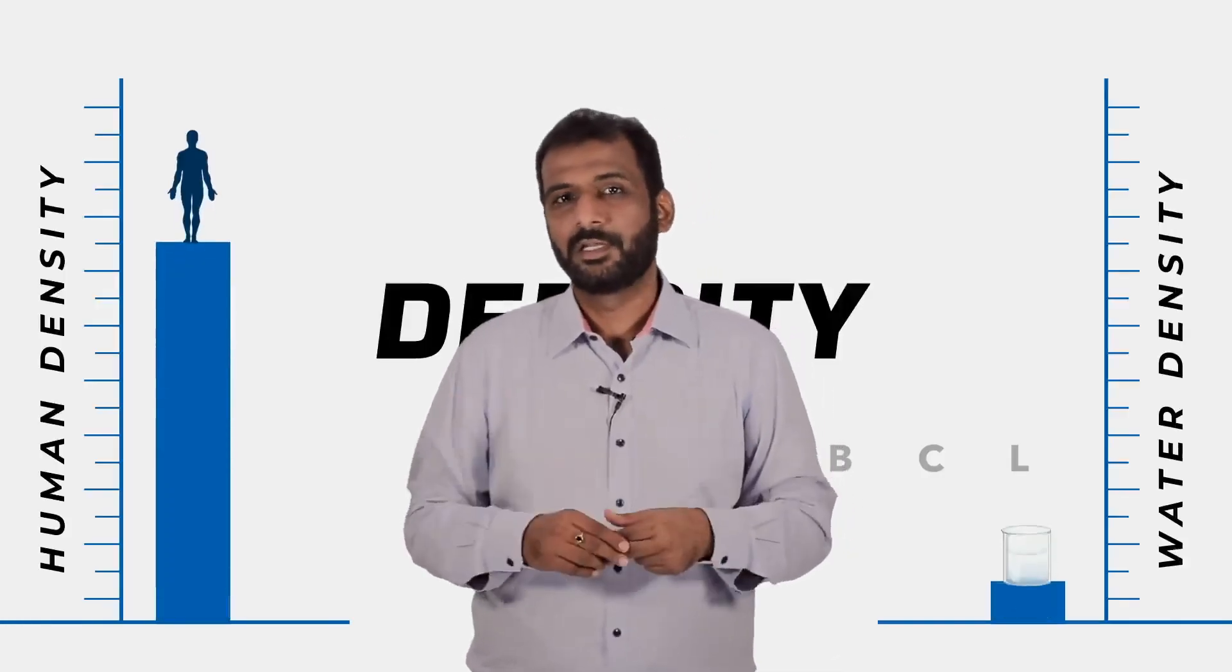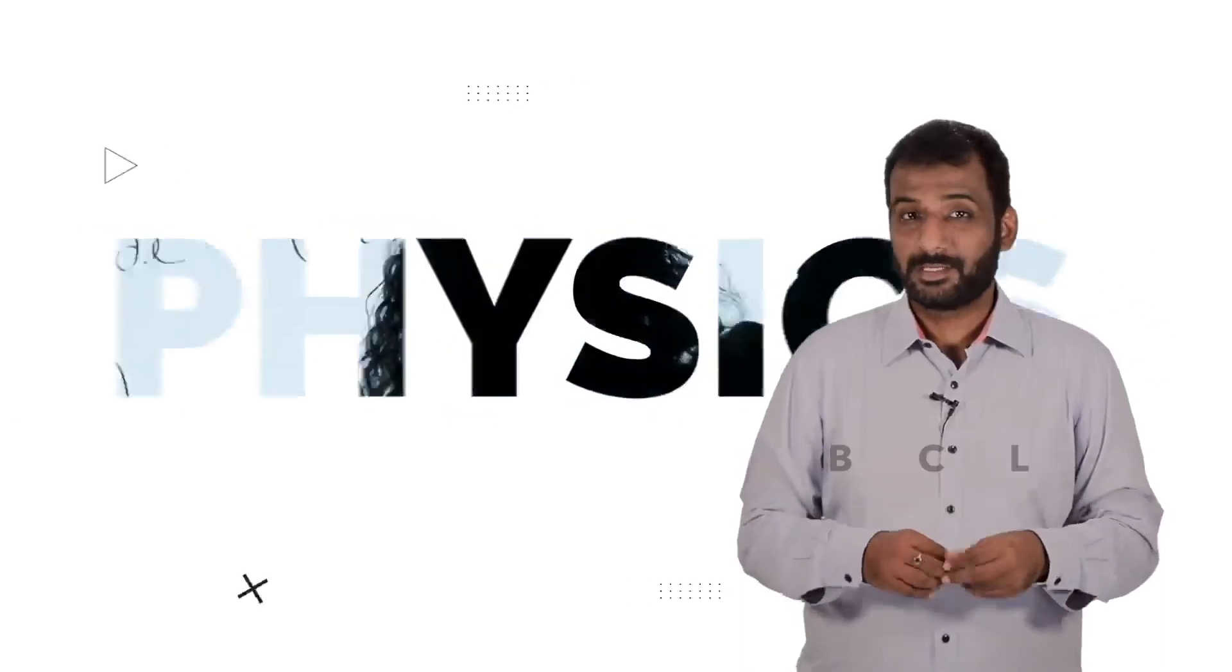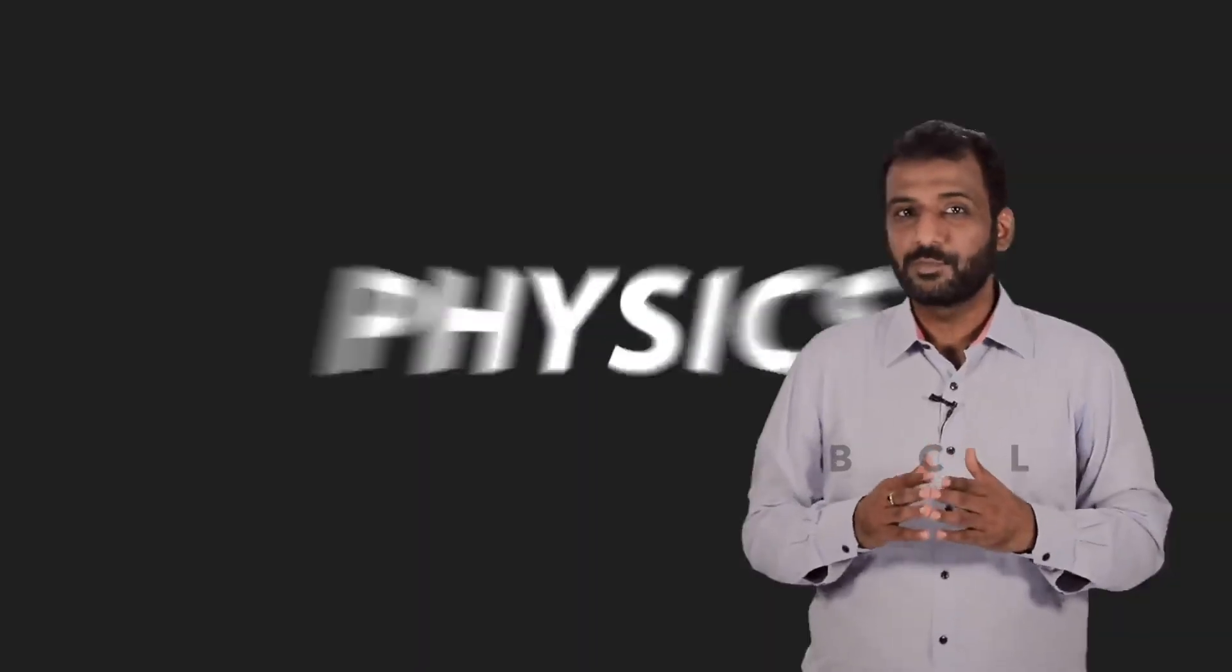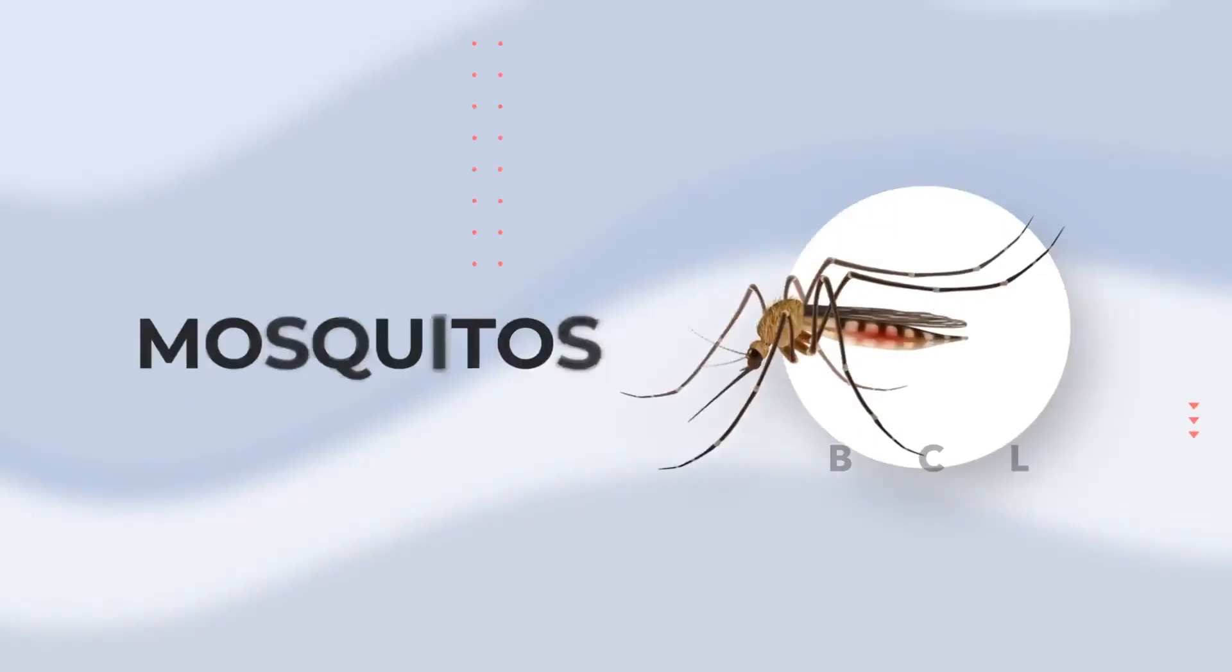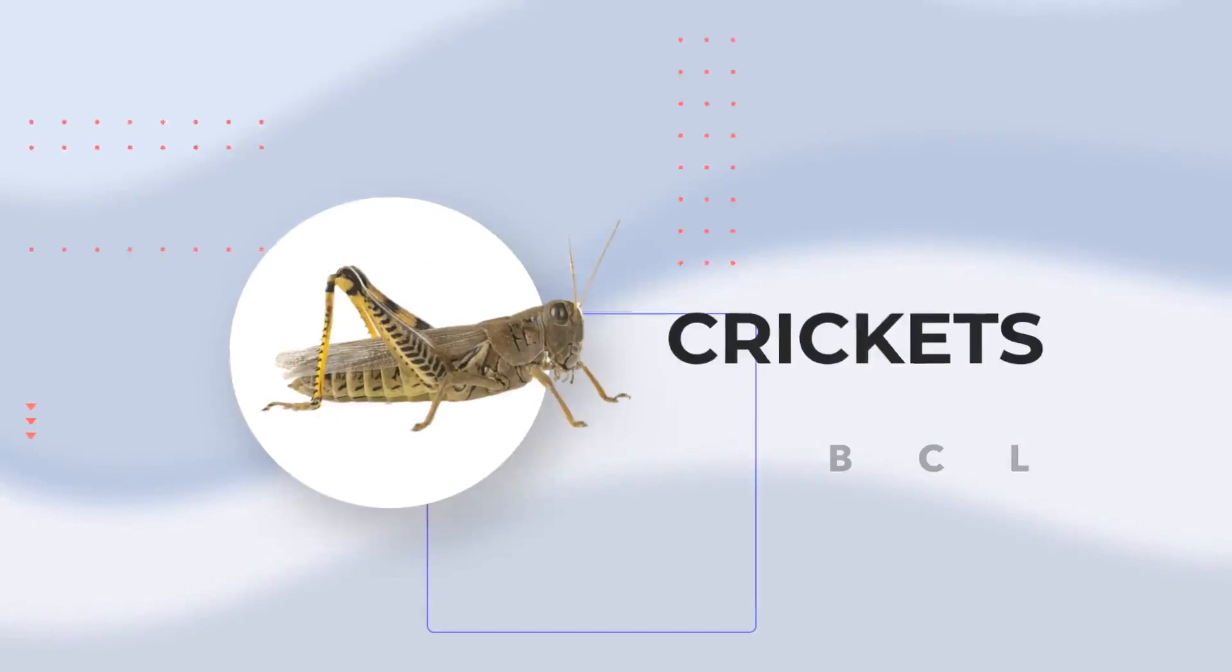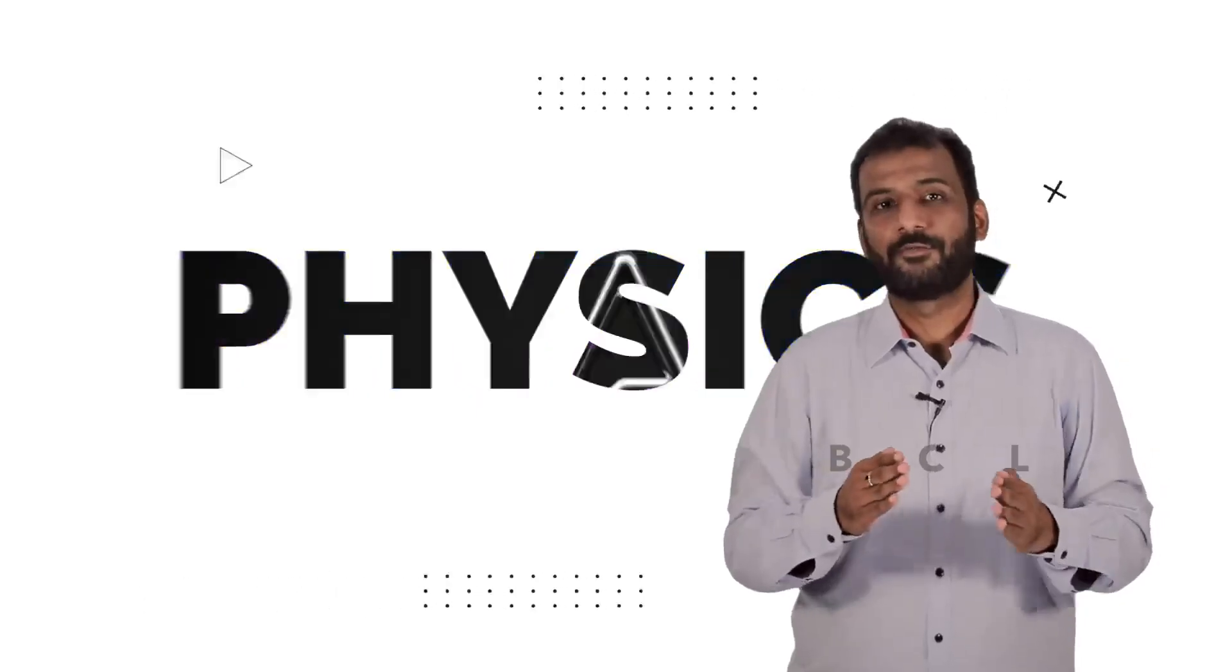But if you just imagine, you would definitely sink, because the density of the man is actually greater than the density of water. Yet, you can actually see some small creatures walking on the surface of water, like mosquitoes, like crickets. They actually walk on the surface of water.